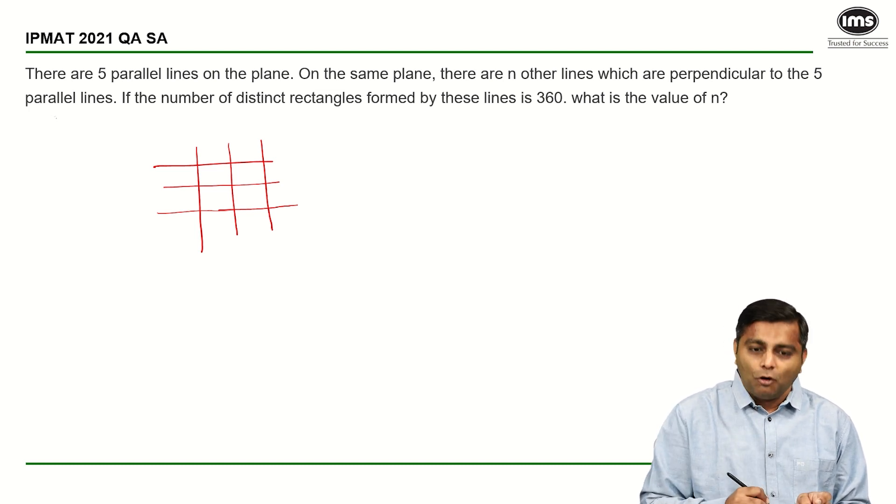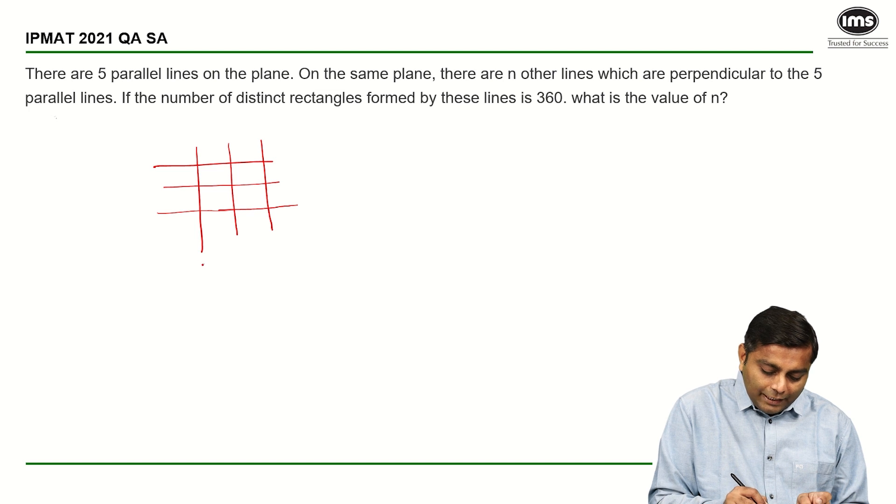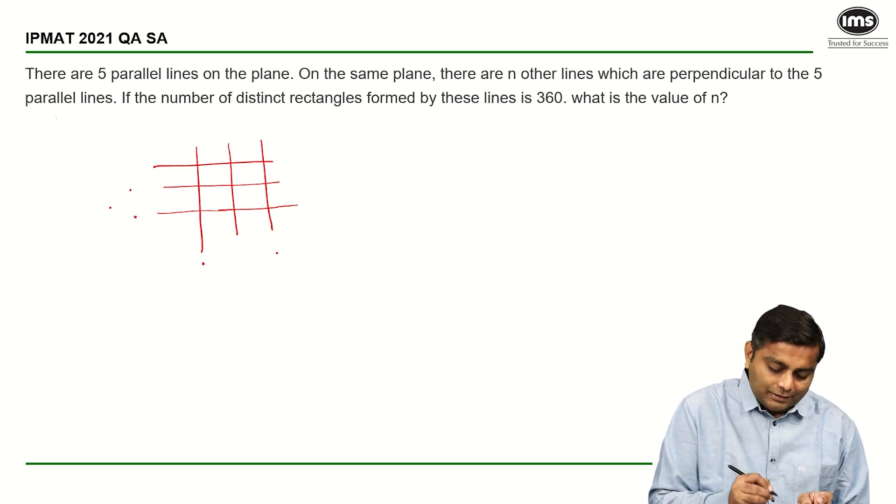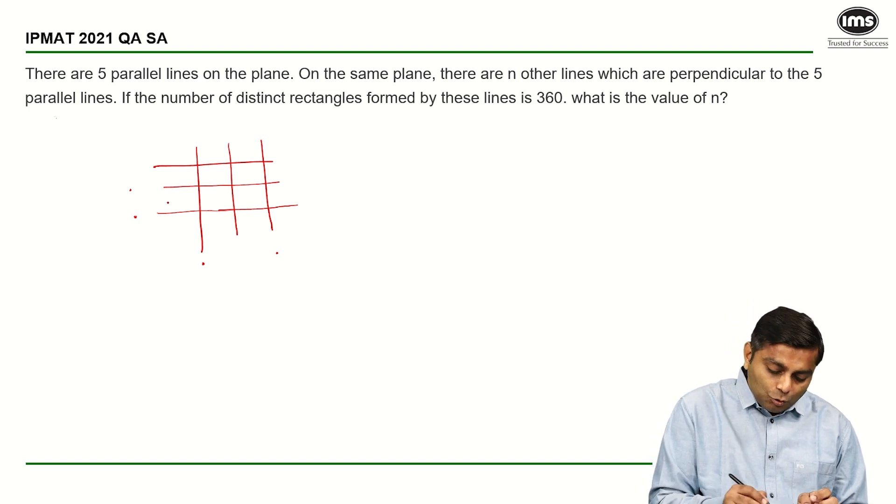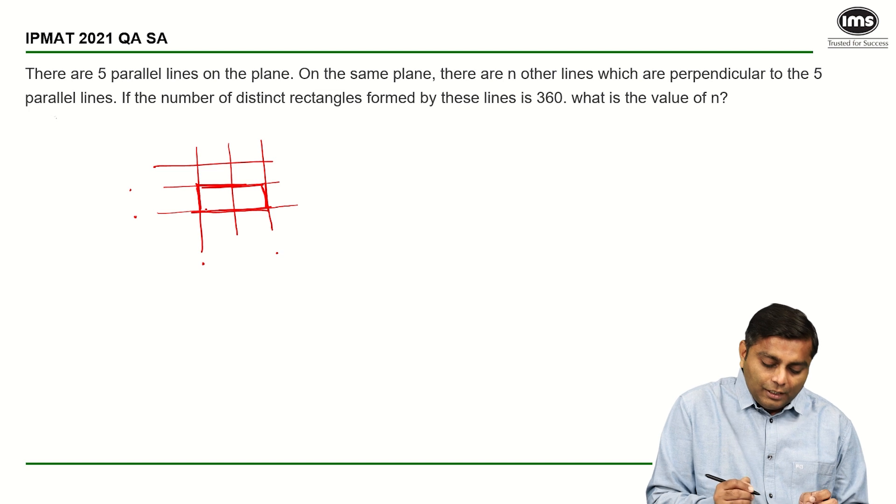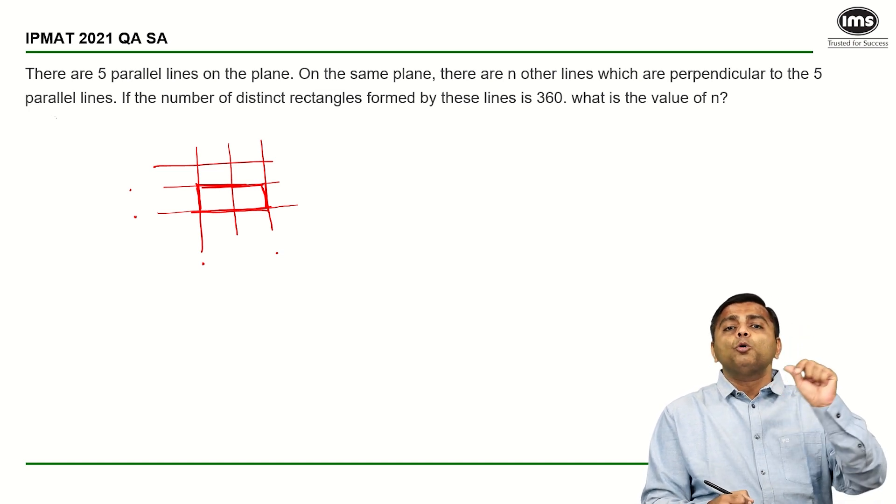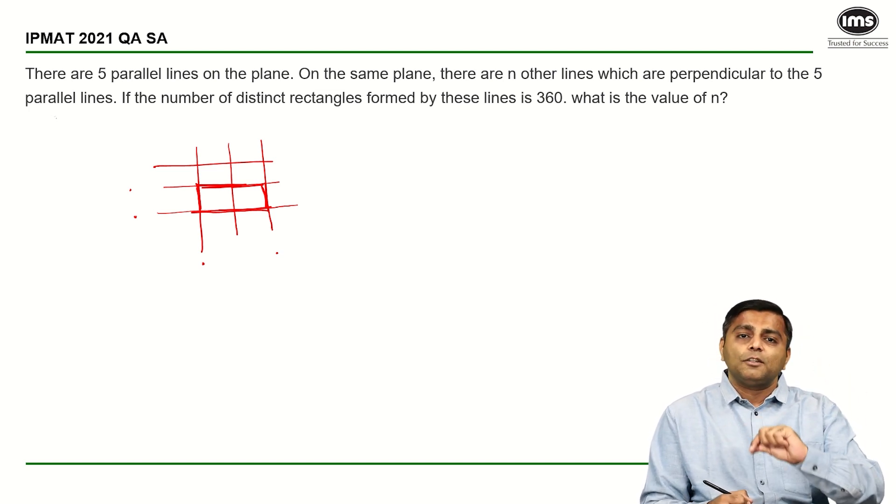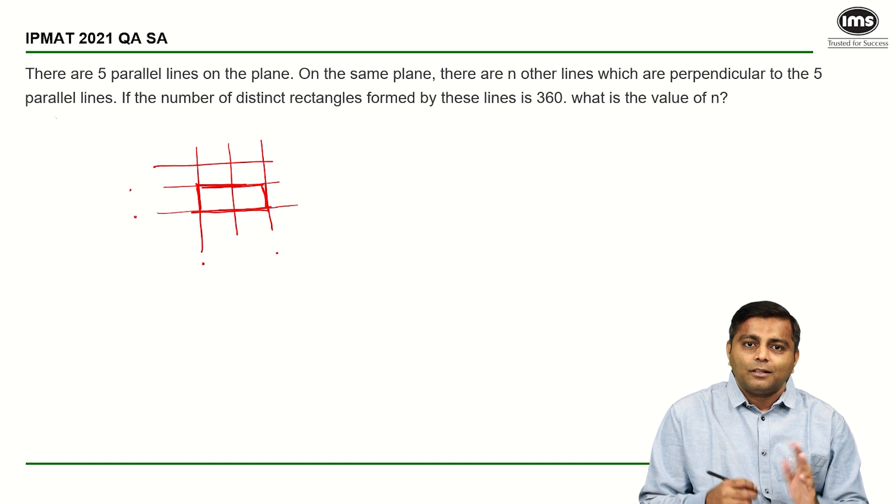Understand that any rectangle to be formed, we are going to need two vertical lines and two horizontal lines. So if you pick up these two horizontal lines and these two vertical lines, then this is going to be the rectangle. This is the rectangle we are talking about. Every time we pick up two horizontal and two vertical lines, we are going to end up with one rectangle.